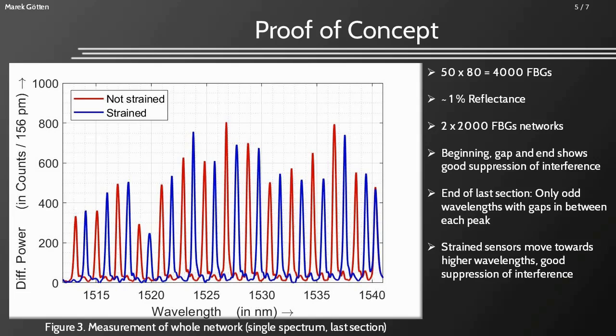When applying strain to sensor numbers 3987 to 4000, the peaks shift towards higher wavelengths. The most right sensor was not strained, so it stays at its current position. By shifting the peak wavelength, we see the interference of all other 49 sensors at these wavelengths, which is very low. The reflectance of all sensors is around 1%.